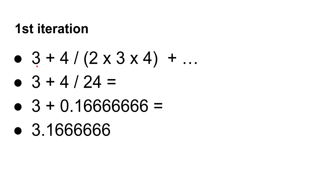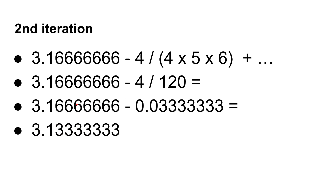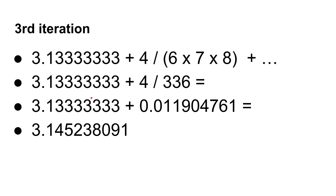So if you look at the first iteration, we have three plus four divided by two times three times four, which is four divided by 24, which gives us 0.1666 recurring. So that gives us 3.1666 — obviously that's not very accurate. In the second iteration, we've got four divided by four times five times six, which is four divided by 120, which is 0.03333. So now it's a minus, so we've gone down to 3.1333 recurring — still not at 3.14. In the third iteration, we're back to plus: it becomes four over 336, which is 0.011904761, which gives us 3.145, so we're kind of getting into the right ballpark.